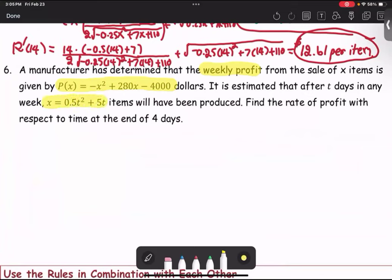X equals 0.5T squared plus 5T items will have been produced. Find the rate of profit with respect to time at the end of four days.